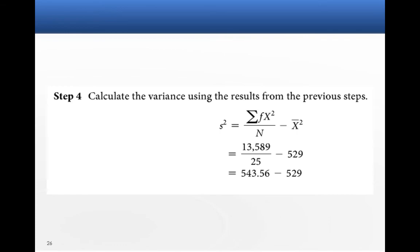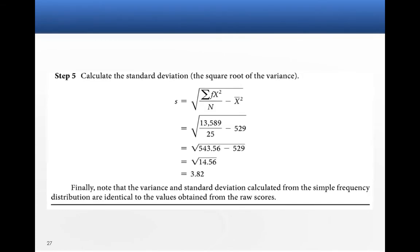Then we're going to plug this in the same way we did before. So the sum of f of x squared divided by n minus x bar squared. That gets us the variance. Then we want to take the square root of that to get the standard deviation.